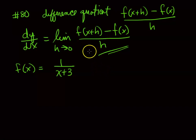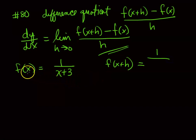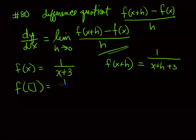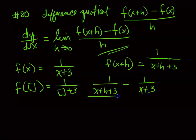First find f(x + h): whatever is in parentheses goes in for x, so f(x + h) = 1/(x + h + 3). Think of it as replacing x with a box — whatever goes in that box goes into the expression. So our difference quotient becomes: [1/(x + h + 3) − 1/(x + 3)] / h.